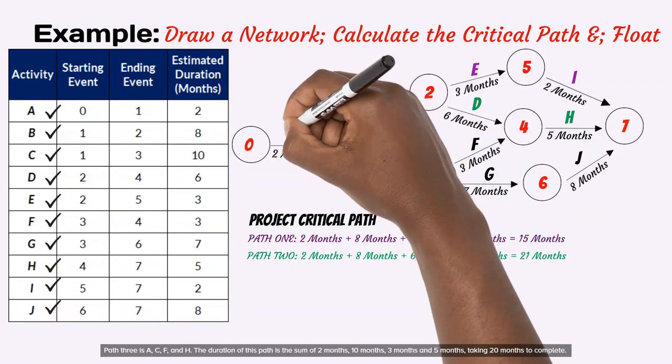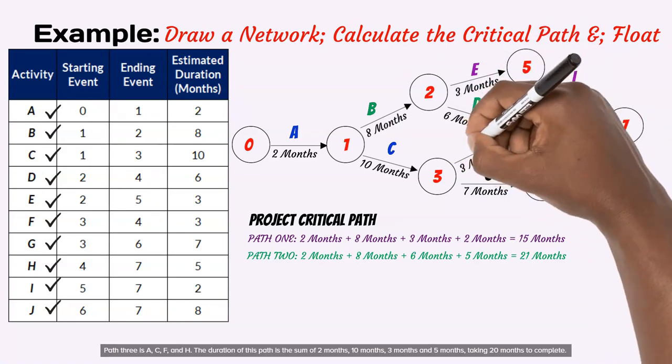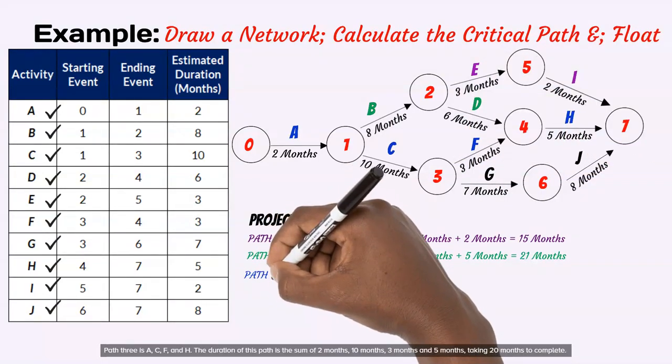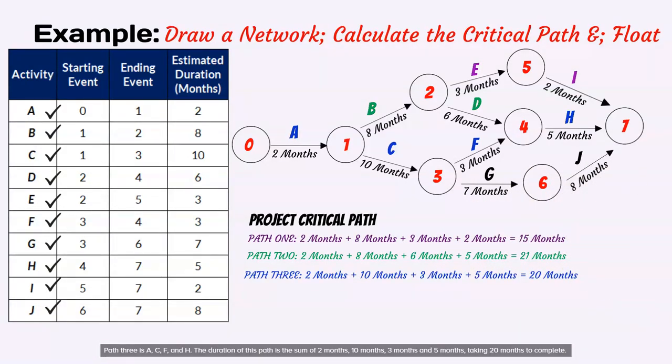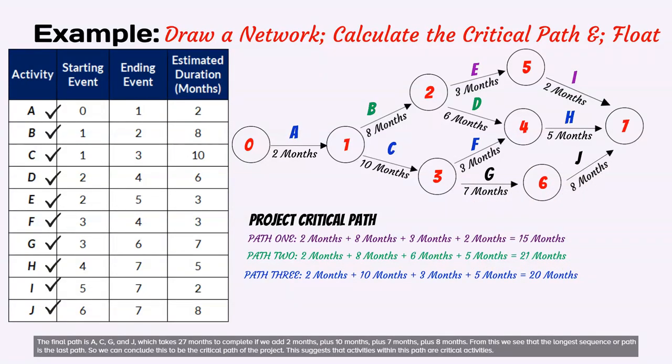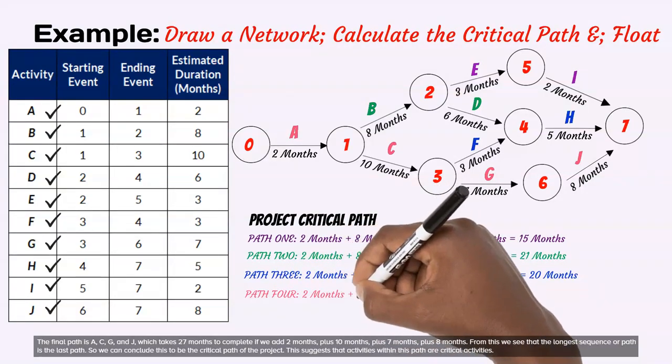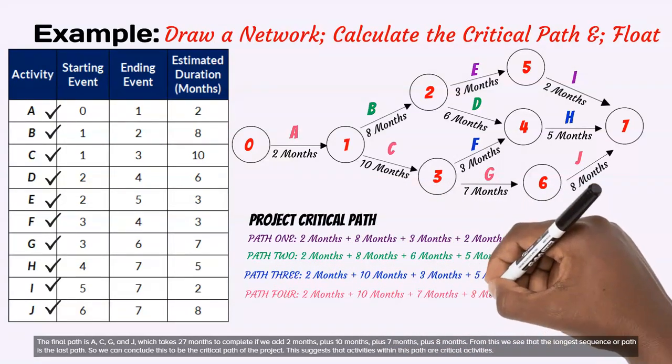Path 3 is A, C, F, and H. The duration of this path is the sum of 2 months, 10 months, 3 months and 5 months, taking 20 months to complete. The final path is A, C, G, and J, which takes 27 months to complete if we add 2 months, plus 10 months, plus 7 months, plus 8 months.